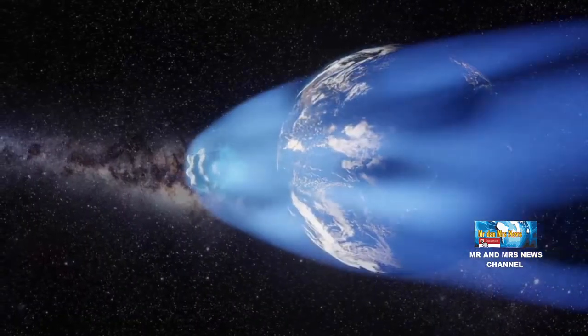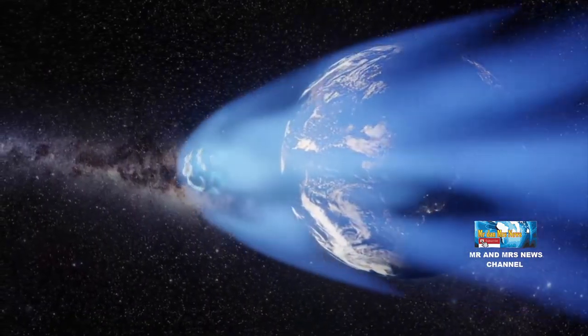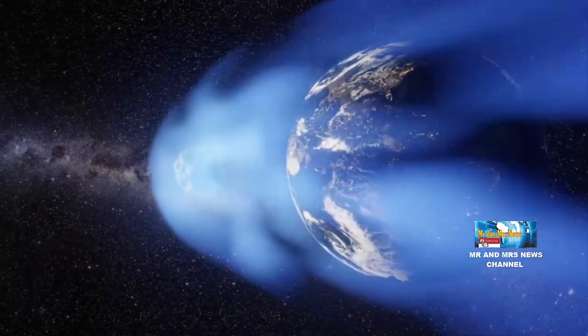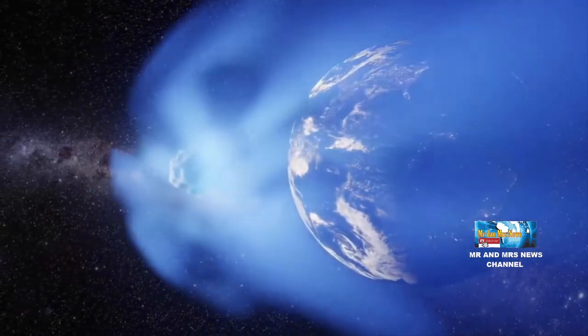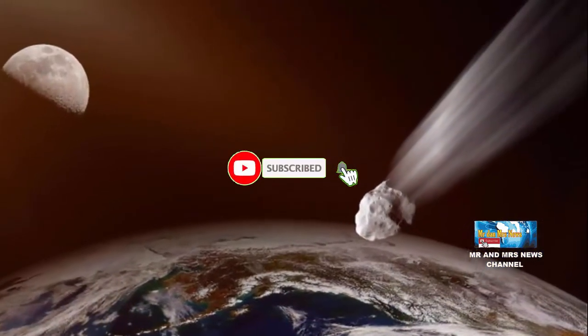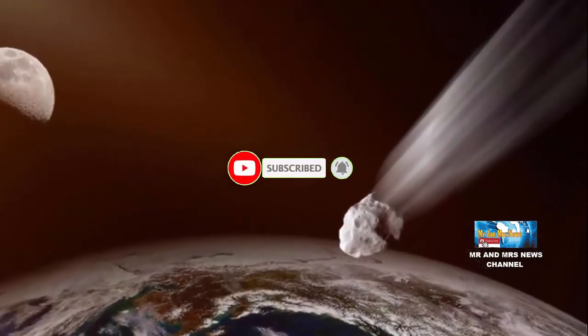Asteroid 2021 UA1 yang melintas di luar Orbit Stasiun Antariksa Internasional atau ISS berada lebih rendah daripada orbit satelit komunikasi. Dengan ukuran yang hanya 2 meter, asteroid ini akan terbakar habis di atmosfer sebelum menyentuh daratan.